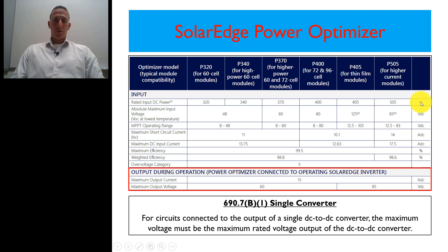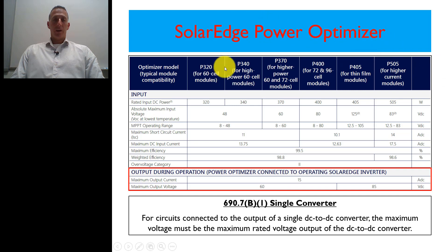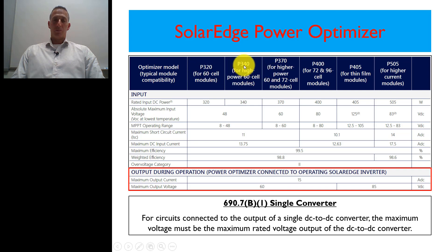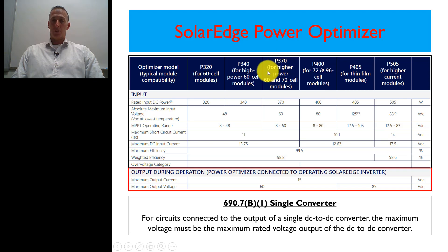If you take a look at this image right here, what we're looking at is a spec sheet, or a portion of a spec sheet, from SolarEdge related to their power optimizers. These are the newest models from 2018-2019 when the newer models came out. You can see across the top these are the optimizers — you have a P320, it goes P340, all the way up to P505. Each one of these optimizers corresponds to a different type of module based on the cells, voltages, and so forth.